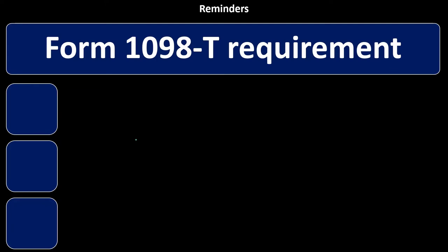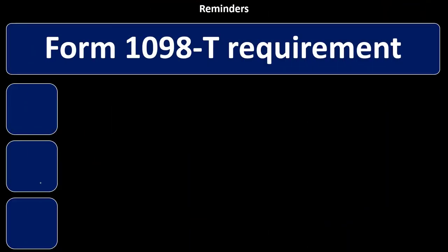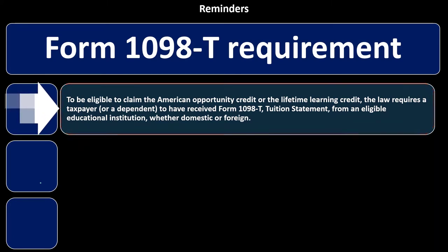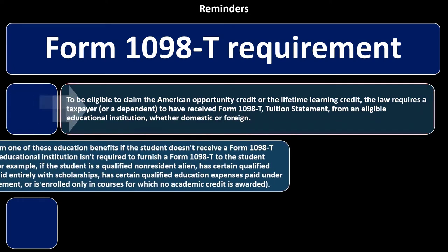Reminders on Form 1098-T requirements. The 1098-T provides information about education expenditures, typically from an educational institution. To be eligible to claim the American Opportunity Credit or the Lifetime Learning Credit, the law requires a taxpayer or dependent to have received a Form 1098-T tuition statement from an eligible educational institution, whether domestic or foreign.